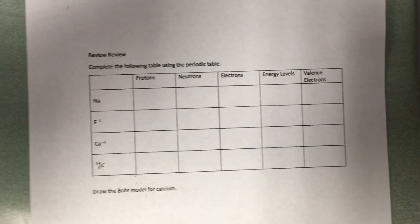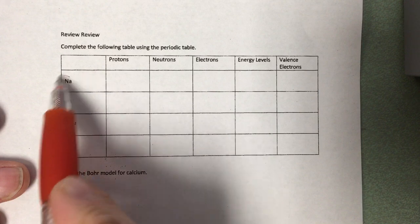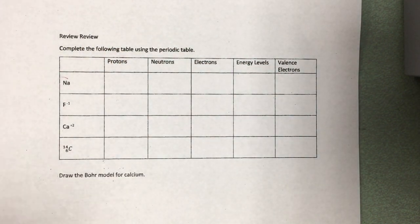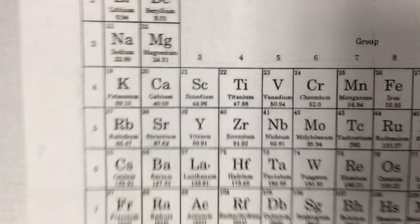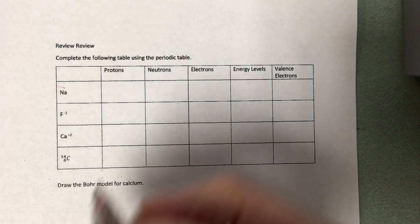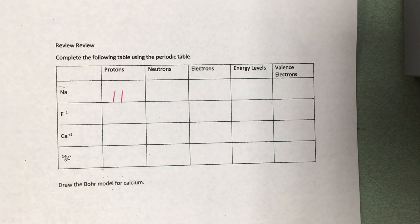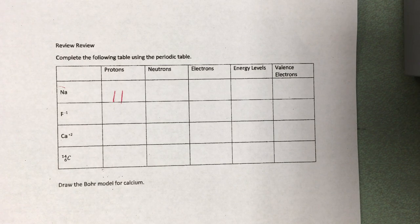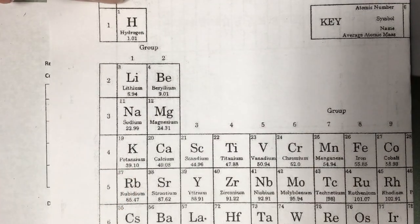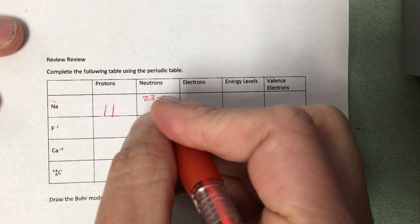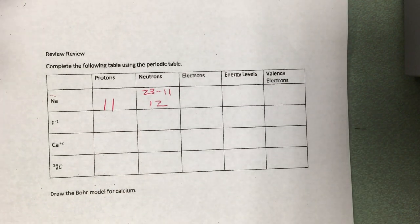Let's start with a typical normal atom of an element — nothing special, no isotope, no ion: sodium. To find the number of protons for any element, you have to look up its atomic number. We get out our trusty periodic table, find sodium, and that number in the top corner is 11 — that is the atomic number. The atomic number tells us the number of protons. To find the neutrons, we do mass minus atomic number. The mass of sodium is 22.99, so we round that to 23 and subtract 11. There are 12 neutrons in a sodium atom.